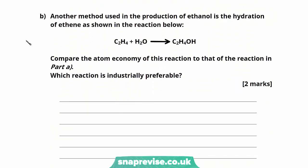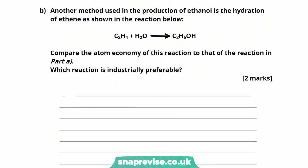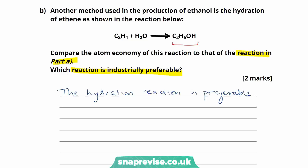Now for the second part of the question. Another method for producing ethanol is the hydration of ethene. Compare the atom economy of this reaction to fermentation. Which is industrially preferable? In the hydration of ethene, only one product is produced — the ethanol we desire. There are no by-products formed, meaning this reaction has an atom economy of 100%. This makes the hydration reaction more preferable, since no waste products or by-products are formed.